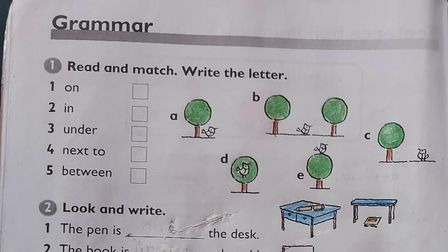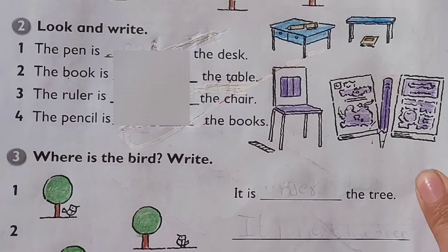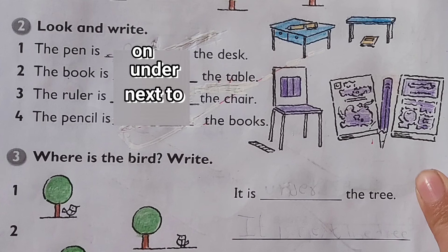Number one: read and match — write the letter. On is D. In is D. Under is A. Next to is C. Between is B. Number two: look and write the correct preposition. Number one: the pen is on the desk. Number two: the book is under the table. Number three: the ruler is next to the chair. Number four: the pencil is between the books.